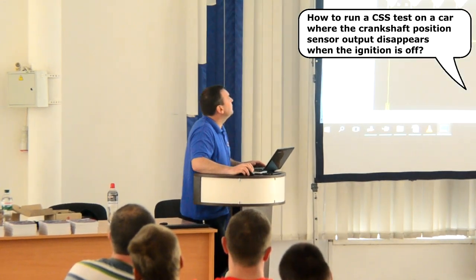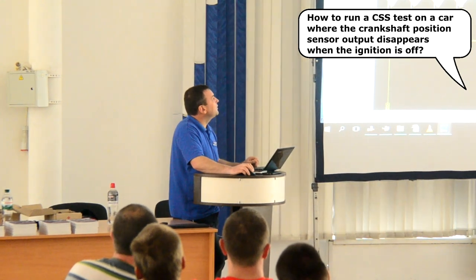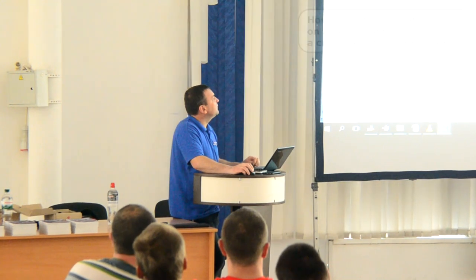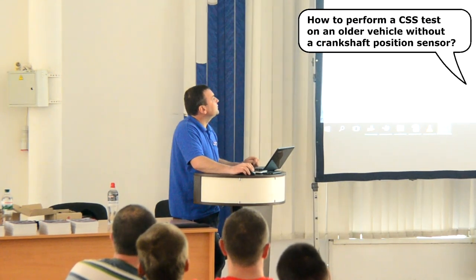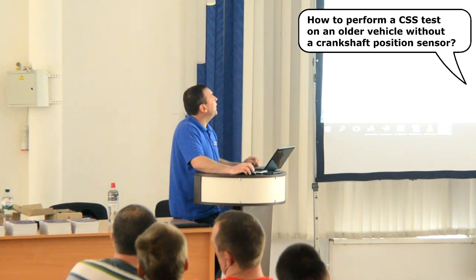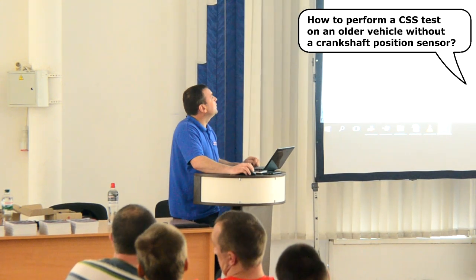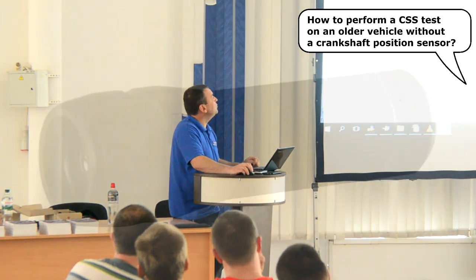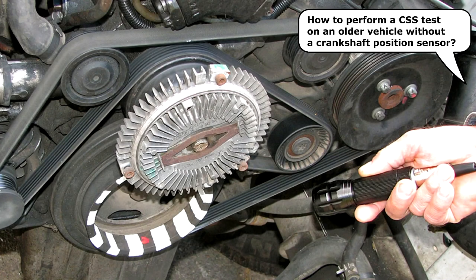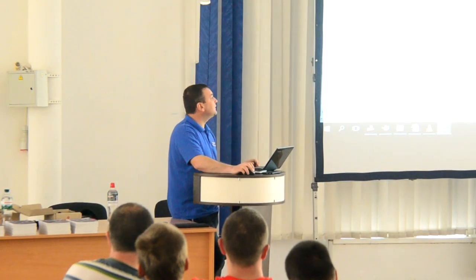If the task is to check the compression using the CSS test, then you will have to use the remote fuse switch to turn off the engine. On vehicles where it is difficult or impossible to connect to the signal wire of the crankshaft position sensor, instead of the signal from the standard crankshaft position sensor, you can record the signal from an external crankshaft position sensor. The most convenient way to do this is to use an external optical laser crankshaft sensor, whose ray should be directed to optical marks previously applied with white paint on the crankshaft pulley, simulating the teeth of the reluctor wheel.